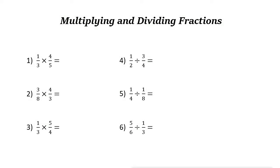Multiplying and dividing fractions. To multiply two fractions, you just need to multiply the numerators and the denominators. For example, 1 times 4 is 4, and 3 times 5 is 15, so 1/3 times 4/5 equals 4 over 15.